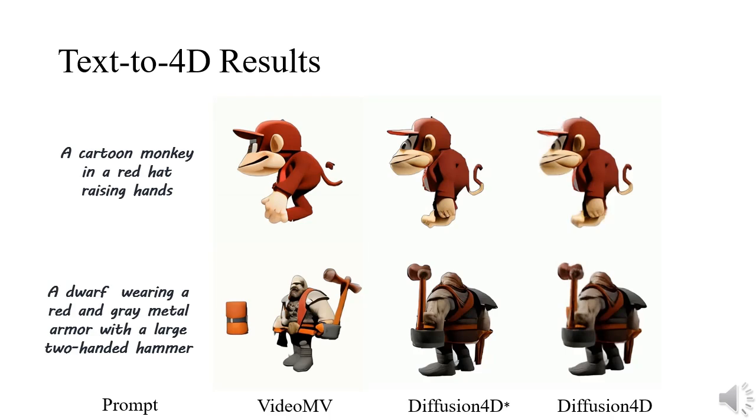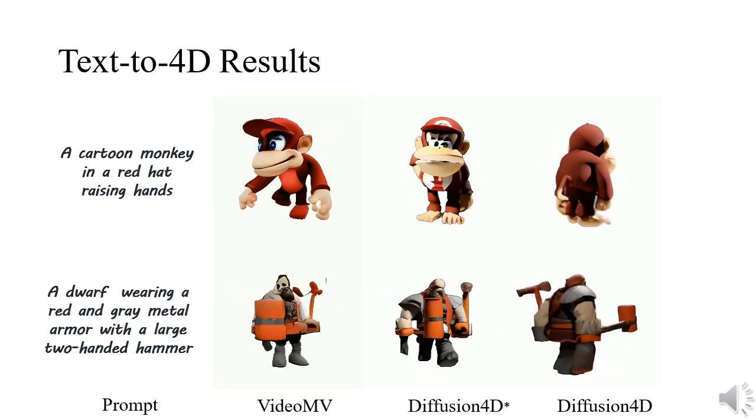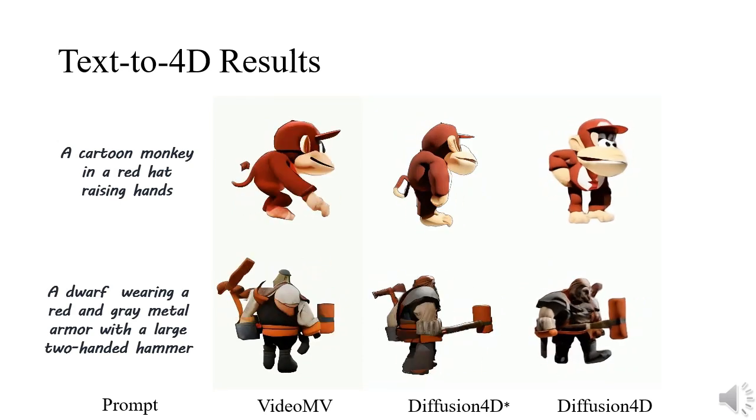In the following, we show our generated results of three tasks: text to 4D generation, single image to 4D generation, and static 3D to 4D generation. For each prompt, we also show the outputs from VideoMV that are the orbital view videos of static 3D assets. For our methods, we use Diffusion4D* to denote generated videos from 4D-aware video diffusion model and Diffusion4D to denote rendered views from 4D construction. Our framework is capable of generating diverse and realistic 4D assets with satisfactory geometrical and temporal consistency.